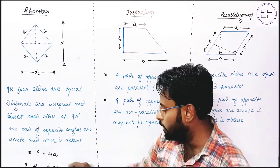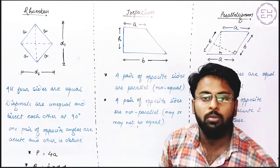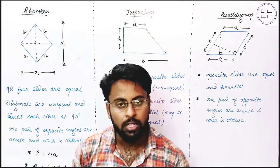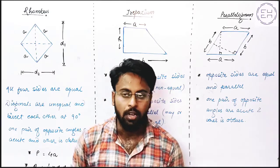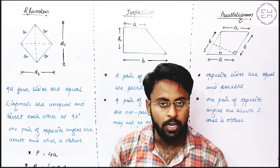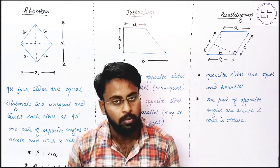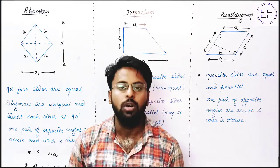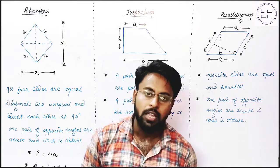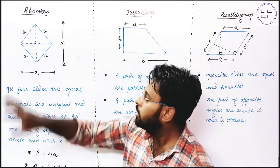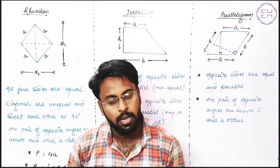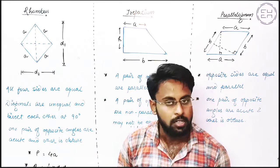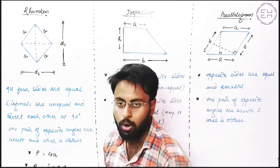Area A = ½ × d1 × d2. Both these formulas are very important because any question framed from Rhombus will be asked from either perimeter or area. Also, the Pythagorean triplet discussed in the previous video is very important — with its help you will get Rhombus questions directly, saving time. So the Pythagorean triplet is very necessary from the Rhombus point of view. This was our part on Rhombus.